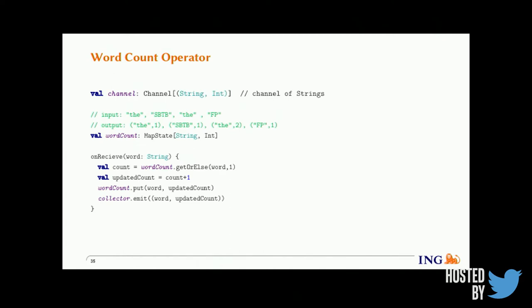The count operator maintains some state — it receives a particular word and keeps a count of how many times it has been received, emitting the word and updated count to the output channel. Importantly, this managed state is handled by the stream processor, which has several advantages: memory management is handled by the processor, and the state can be checkpointed so that if an operator dies, it can be restored from its previous state. That's why modern stream processors like Flink provide explicit state management constructs.